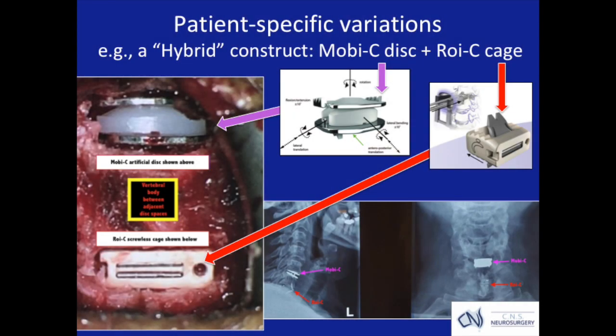This approach can also be applied to other types of constructs. Here is a patient of mine who has undergone a hybrid cervical spine procedure using an artificial disc and a biologically active cage system at the adjacent level. With these types of surgeries, we have had excellent patient-reported outcomes to date.